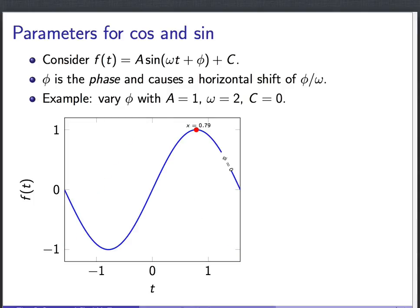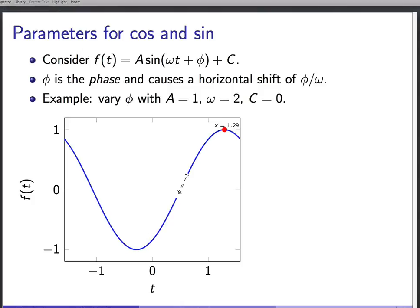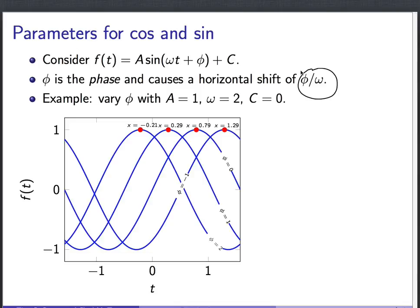On the other hand, if I instead started here, this is back to my base value of φ equals zero. And if I instead decrease φ, make it negative, I shift to the right. And since I made φ negative one, I have a shift to the right of one over two, or a half. So I can show you all of these together on the same picture. But the long and the short of it is that the size of the shift is φ over ω. And if φ is positive, I'm going to end up shifting to the left. And if it's negative, I'll shift to the right.